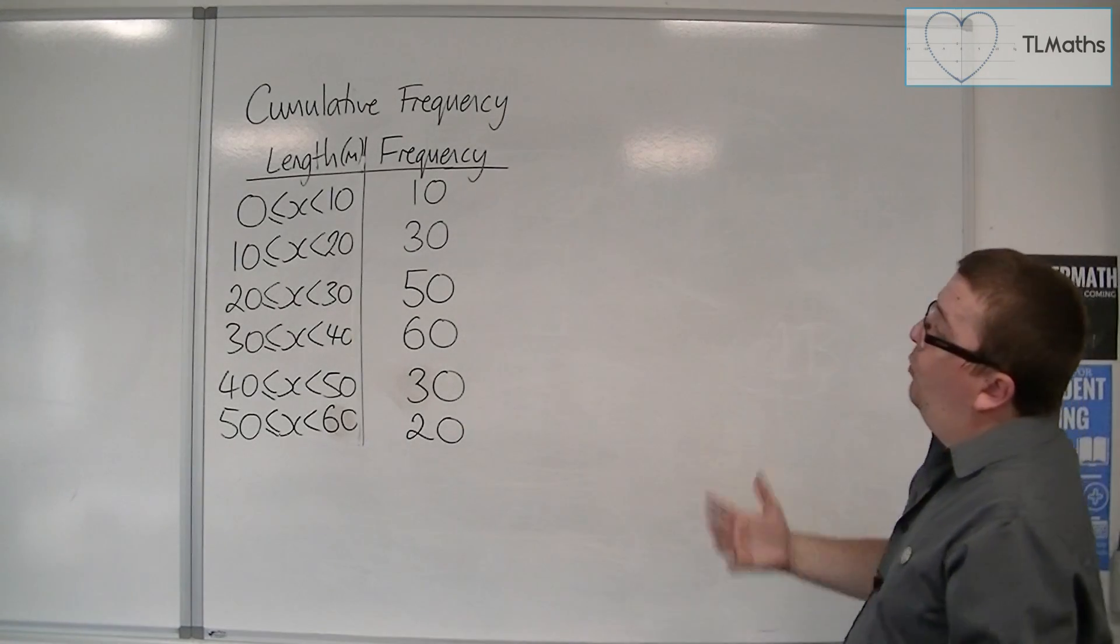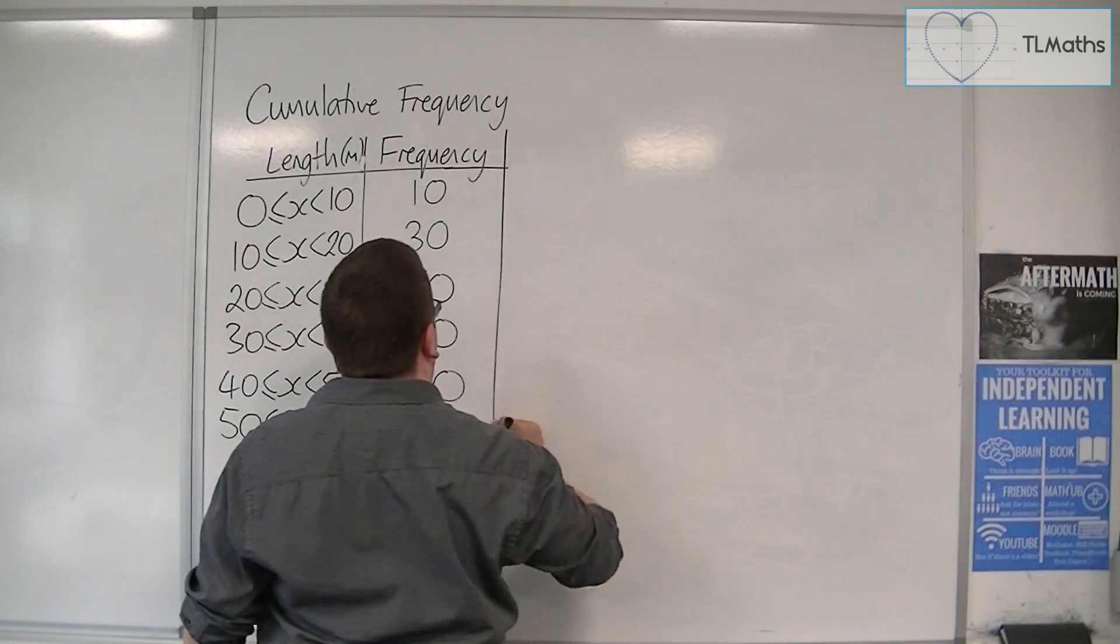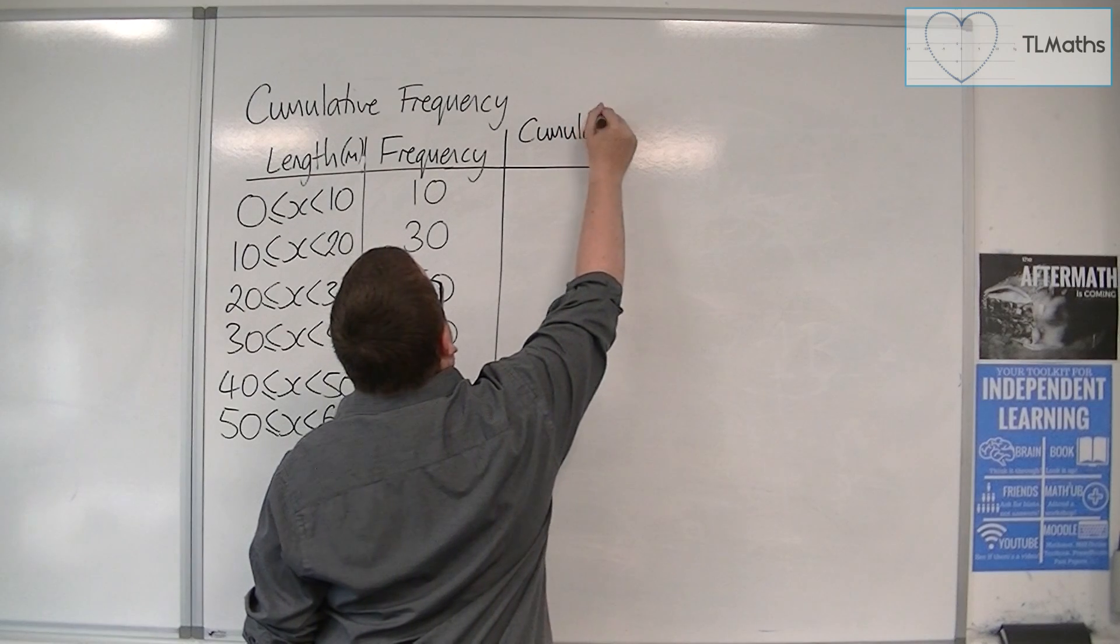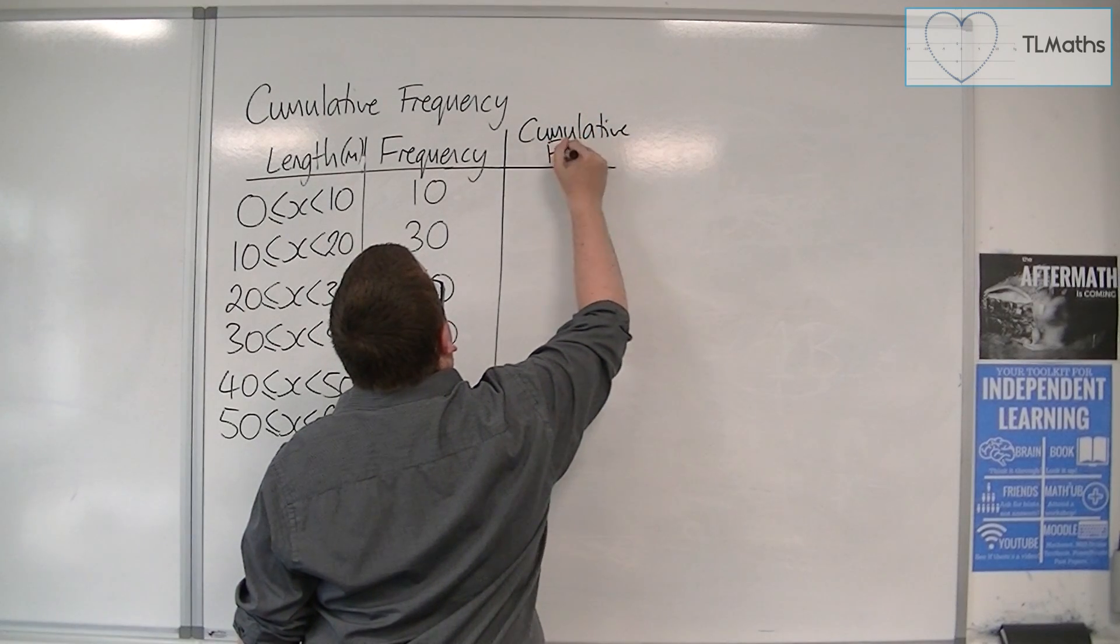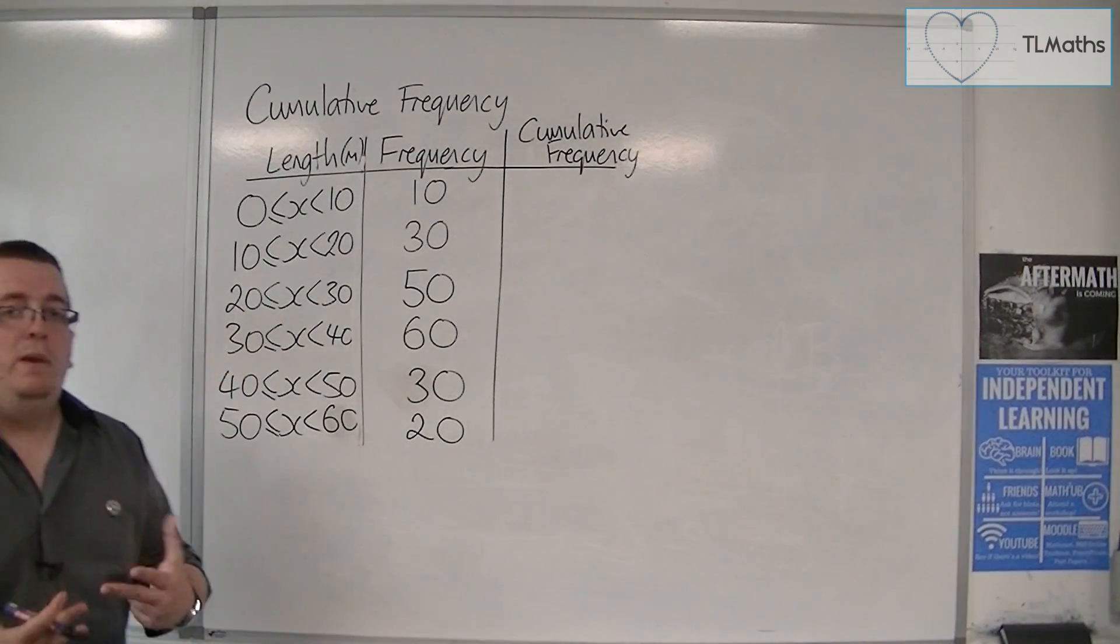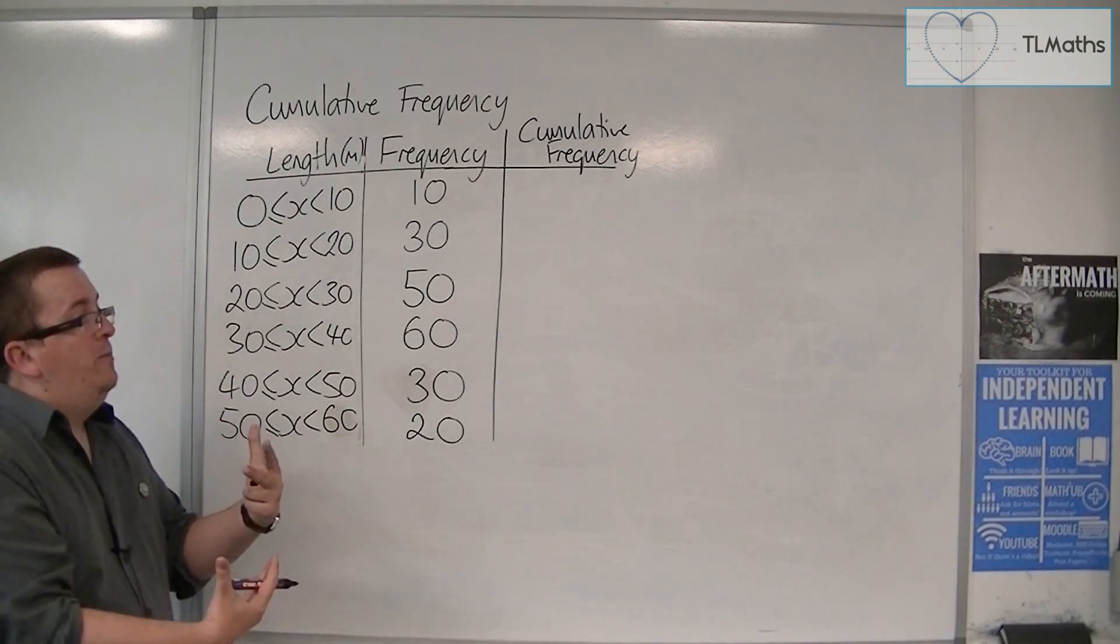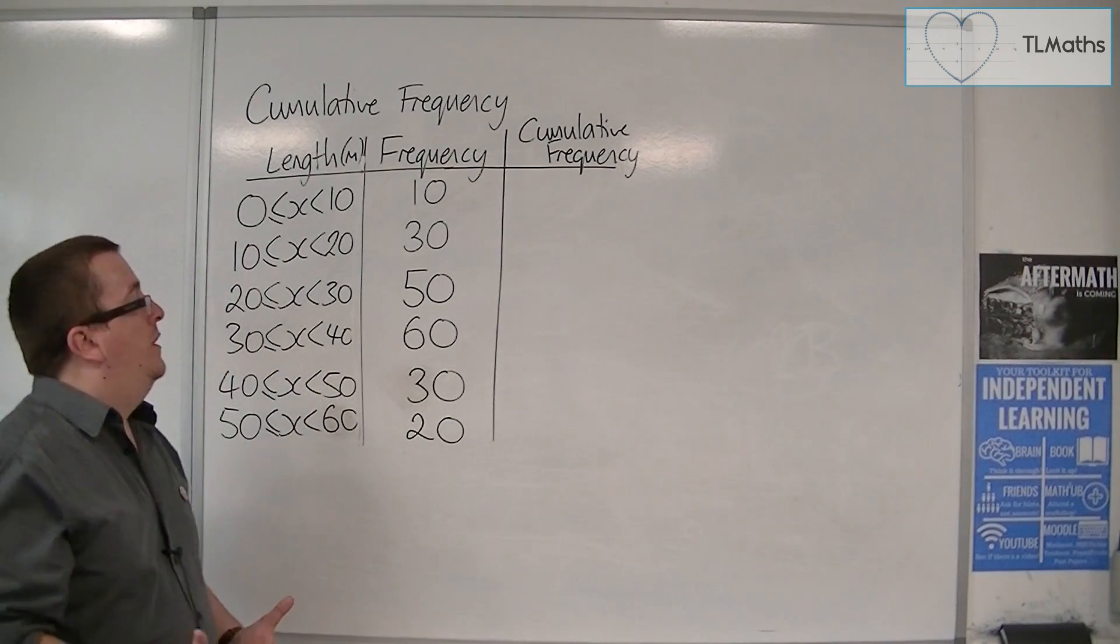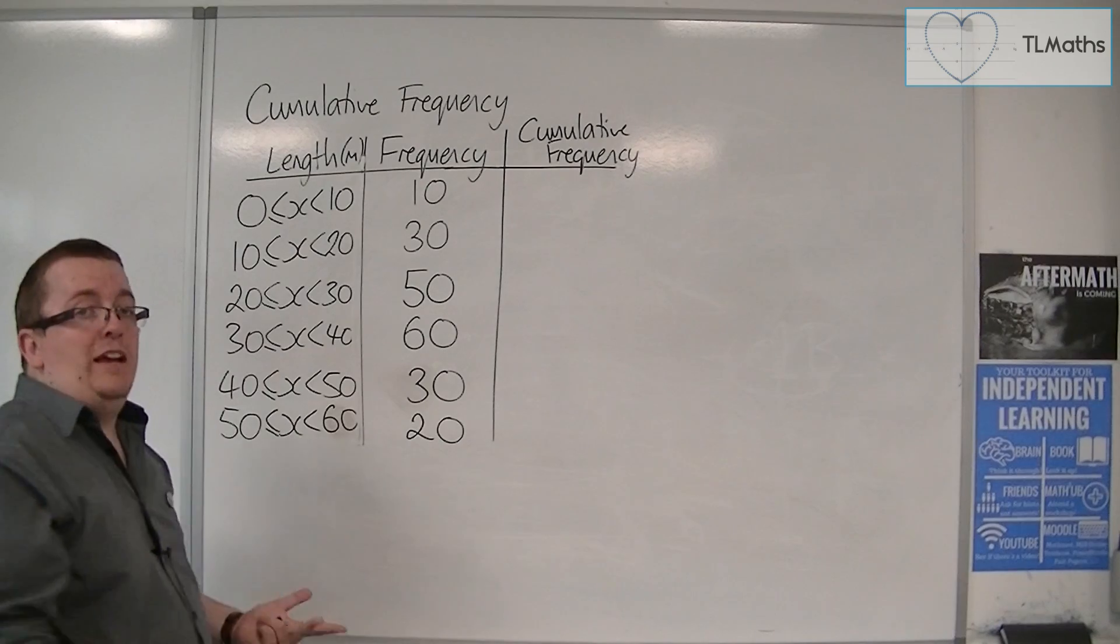So what we're going to do is we're going to have another column and we're going to call it the cumulative frequency. And what cumulative means is it's coming from the word accumulate and so you are adding more things on and adding these things together as you go.